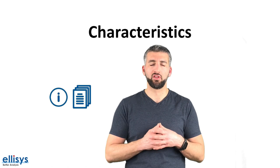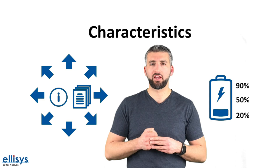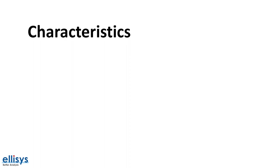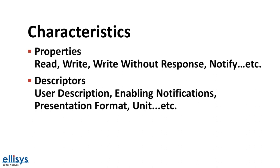A characteristic within a service represents a piece of information or data that the server wants to expose to a client. For example, the battery level characteristic represents the battery level percentage in a device, which can be read by a client and is contained in the value field of that characteristic. A characteristic contains other attributes that help define the value it holds. One type is properties, which define how a characteristic value can be used — such as read, write, write without response, notify, and others. Another type is descriptors, which contain related information about the characteristic value, such as a user description, fields for subscribing to notifications and indications, and a field that defines the presentation format and unit of the value.